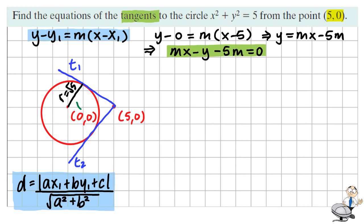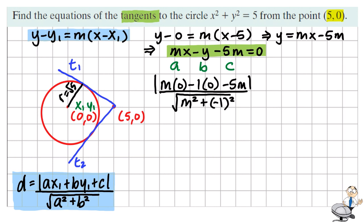We know that the distance from these lines to the center is the same as the radius which is root five. So we could use the perpendicular distance formula from the line to the point zero zero, where a is m, b is negative one, and c is negative five m. So we put these into the formula and all equals square root of five.